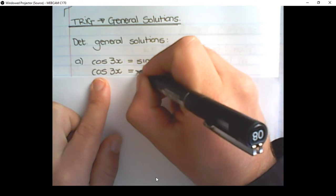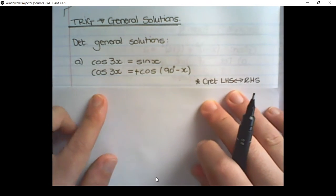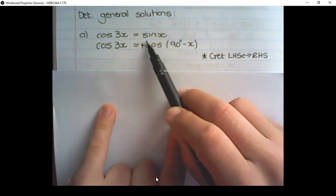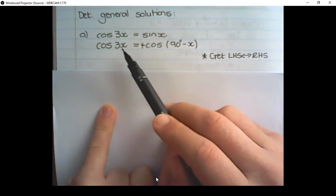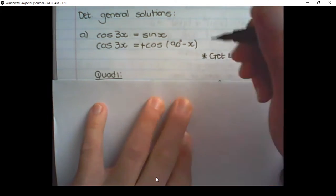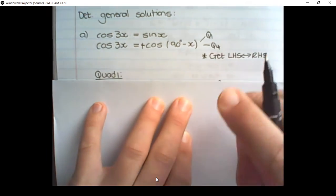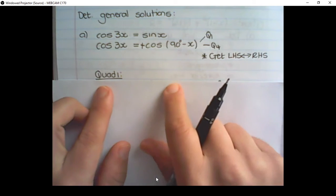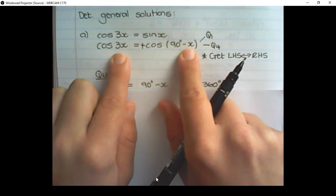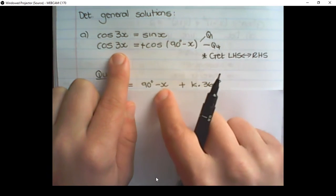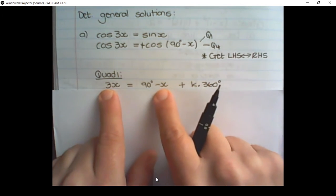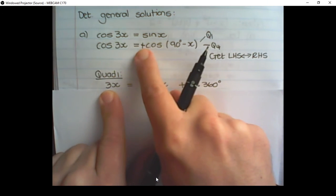You'll notice that this is a positive value. Because it's a positive value, we can consider the quadrants where cos is positive. This cos equals a positive value of cos, and it's positive in quadrant 1 and in quadrant 4. For quadrant 1, instead of finding a reference angle, we have 3x equals to (90° − x), plus k times 360, which is the period for cos.